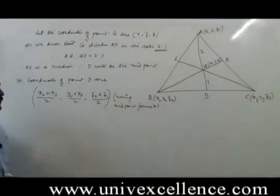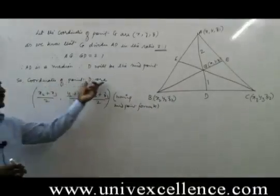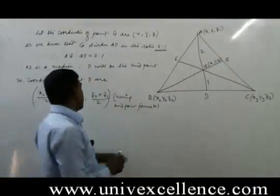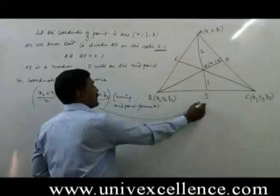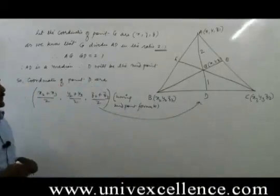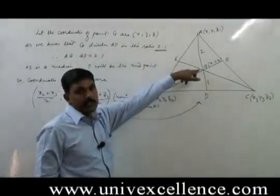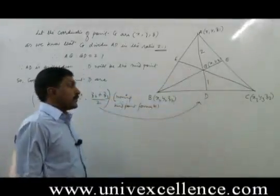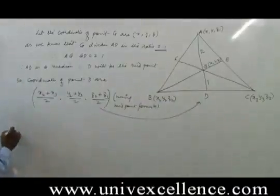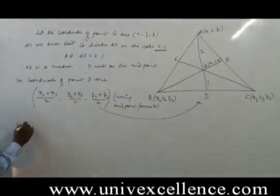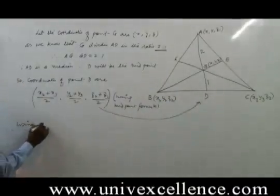Using midpoint formula, we find the coordinates of point D. Now using section formula, we can find the coordinates of point G. Therefore, using section formula: